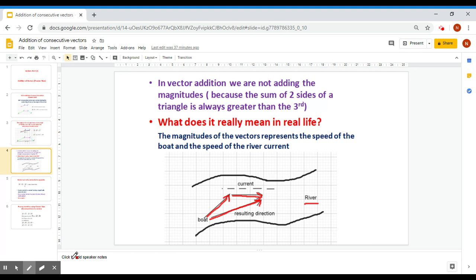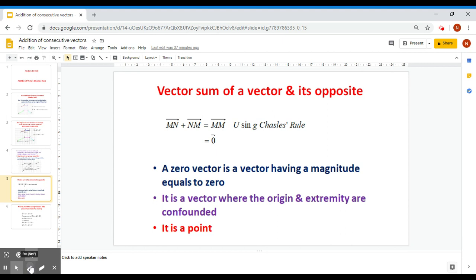Now here, another application: the sum of a vector and its opposite, applying Chasles' Rule. MN is a vector, its opposite is NM. If I apply Chasles' Rule, the origin of the first and the extremity of the last will give me MM.